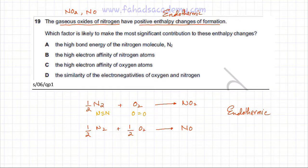Now to break the N triple bond N, the amount of energy that's required is 994 kilojoules per mole. So it requires a lot of energy. To break the oxygen double bond oxygen bond, you just need 496 kilojoules per mole of energy.